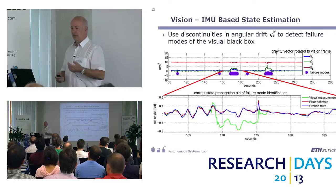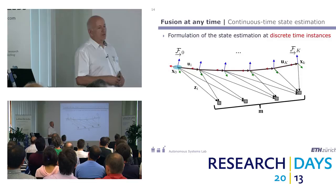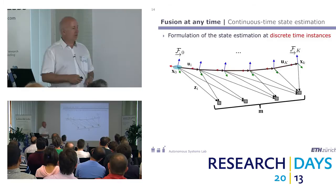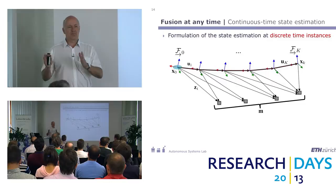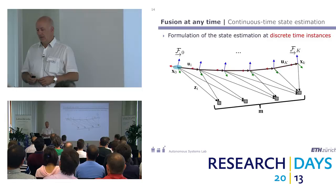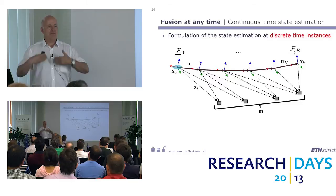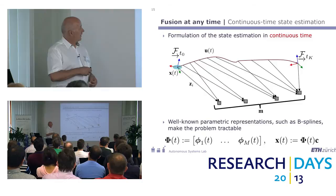A second element we are working on is continuous time state estimation. The way we typically do it today is: at some given time you do an update of the estimate and you assume that in between you have no measurement, linearizing in between the different elements. In a lot of situations you have sensors getting information in a not very precise discrete manner, but in a more random way. This is the case if you have a rolling shutter camera, which is a line shutter camera where each line comes in at a certain time. If you assume the whole picture is taken at the same moment, you are probably pretty wrong. For improvement, you say you have a continuous time estimation and integrate all the information when it comes in, at any time.